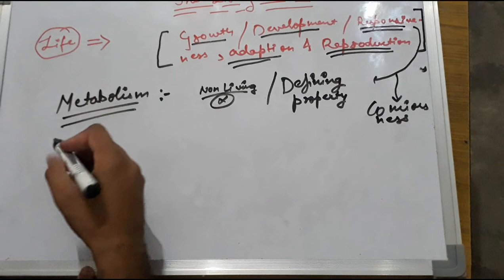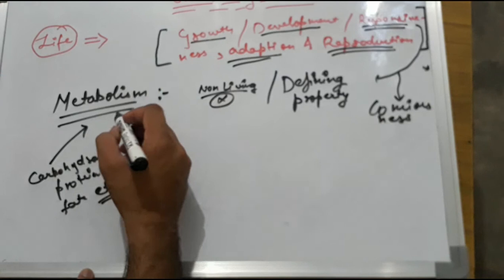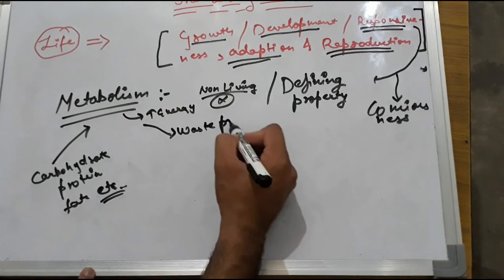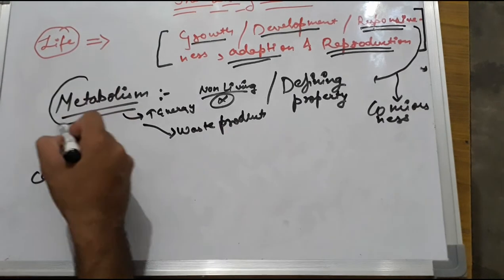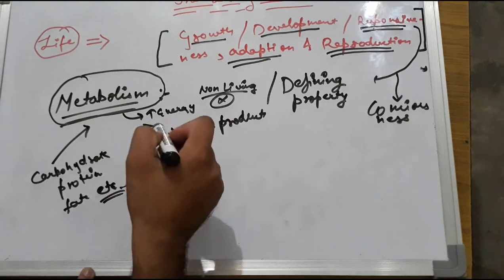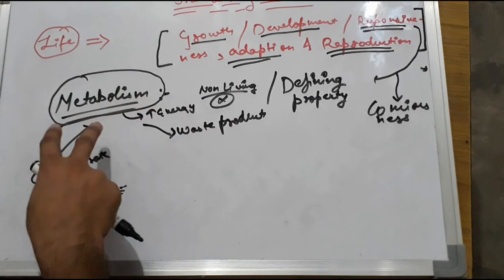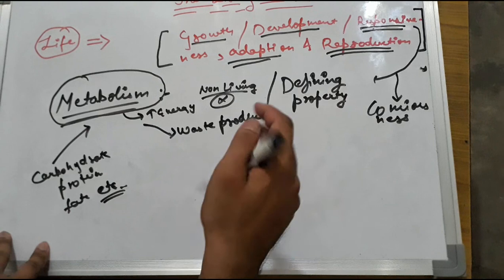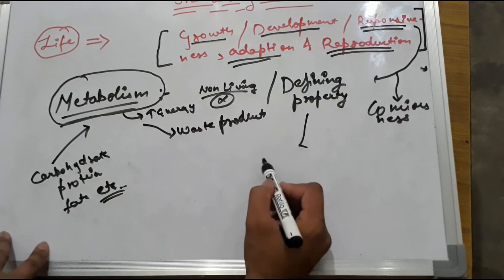Metabolism. In addition, if we have a food intake like carbohydrates, protein, fats, etc., it is metabolized. We get the energy and what next is the waste product. This comes under metabolism. If we get the metabolism, we get the energy and we use it. So it becomes the defining property with the other defining property that is responsiveness or consciousness. These two properties are the defining properties and are present in living organisms.